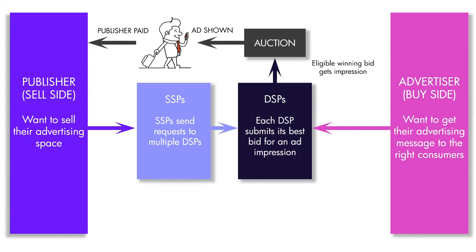The DSP connects into what's called an SSP — the supply side platform — which contains all of the ad space that is available. It enables publishers, meaning media owners and people who manage websites such as broadcasters, to really monetize their inventory. By connecting them to demand side platforms, all buyers get access to all of their inventory — meaning their website, their users, and the inferred data — allowing publishers to maximize the best price for their supply.